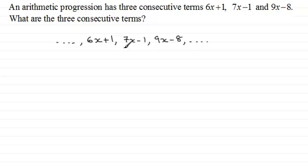Now, what we know is that if we were to add the common difference to 6x plus 1, it would give us 7x minus 1, that's if we add d. We know again that there's a common difference between these two terms, that if we were to add d to 7x minus 1, it would give us the next term, 9x minus 8. And it's this idea that we use to generate an equation.